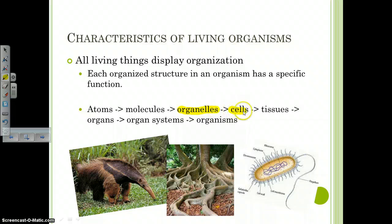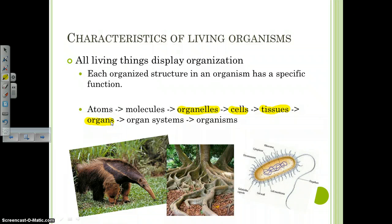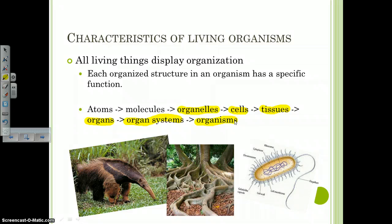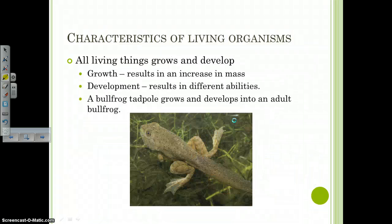Then you have individual cells. Cells come together to form tissues. Similar tissues are organized together to form organs — that would be like your heart. And then similar organs work together to form an organ system, like your entire circulatory system. And then you have your organism, which is the individual living thing that has all the characteristics of life.